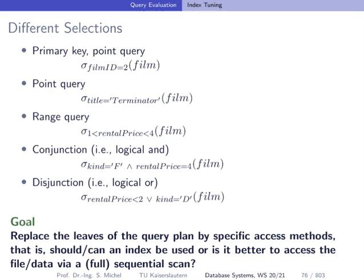Depending on the selection predicate within our query, we distinguish the following query types. The first one asks for film ID equals 2, where film ID is a primary key — this is a primary key point query, asking for a specific attribute to be of a certain value. We can also have point queries for non-primary key attributes, for instance where the title is 'Terminator'. And we can have range queries, for instance where the rental price should be between 1 and 4.